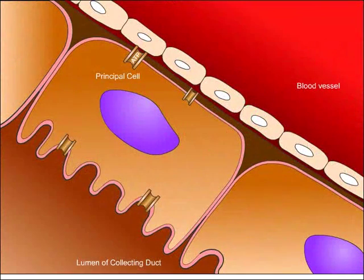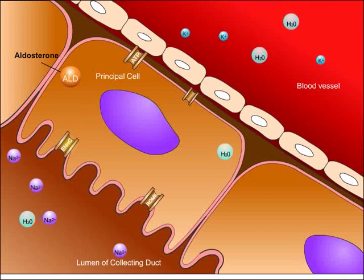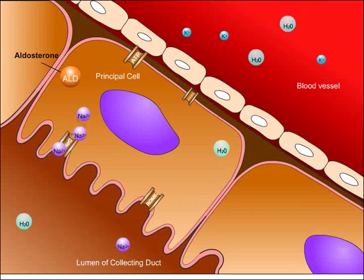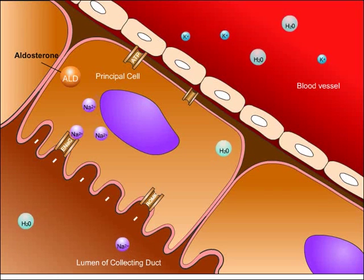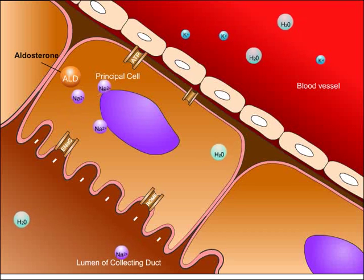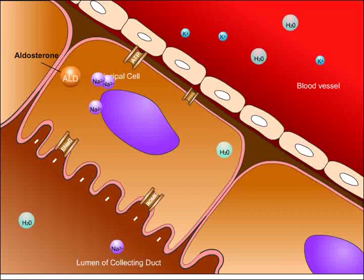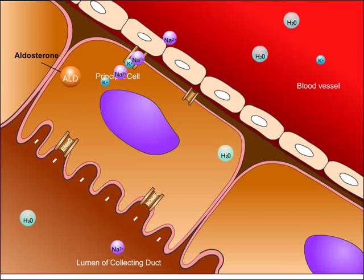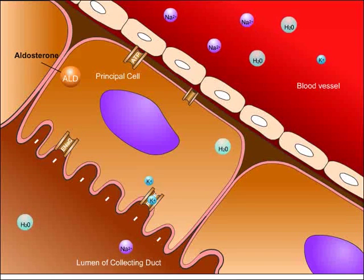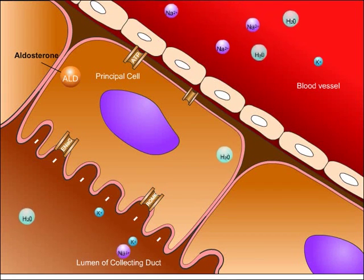Principal cells and intercalated cells line the collecting duct. Let's look at normal ion transport across principal cells of the collecting duct. Aldosterone enters the principal cell and stimulates the sodium channel to increase influx of sodium from the lumen, creating a negative electrical charge on the side of the lumen. Aldosterone also activates sodium-potassium ATPase, causing it to pump sodium into the blood in exchange for potassium. Drawn by the negative electrical charge in the lumen, potassium will leave the cell to enter the lumen via a potassium pump labeled here as ROMK.